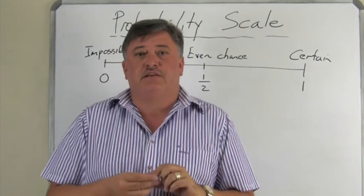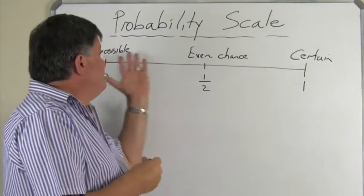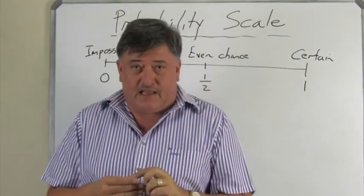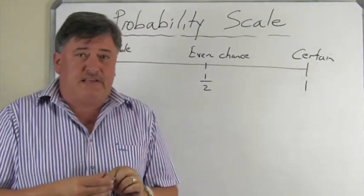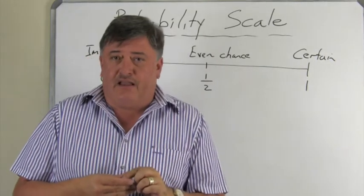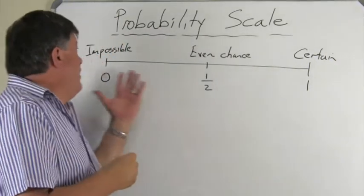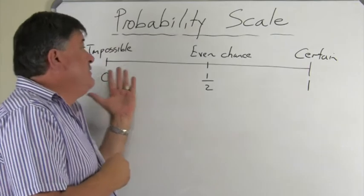We're now going to look at the scale of probability, or also called the probability scale. Probability can take a value or an answer from zero to one.